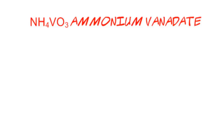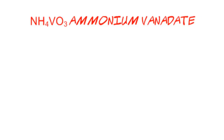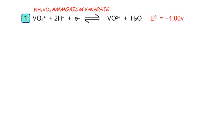Let's move on and take a look at some redox chemistry of vanadium. You might be familiar with ammonium vanadate, where we have the VO3- ion and vanadium appears in the plus-5 oxidation state. In the first half-equation, we have VO2+ where vanadium is in the plus-5 oxidation state, being reduced from plus 5 to plus 4 on the right, with an E-theta value of 1.00 volts. In VO2+ (plus-5 oxidation state) it forms yellow solutions, and when reduced to VO2+ (plus-4 oxidation state) it appears blue in color.